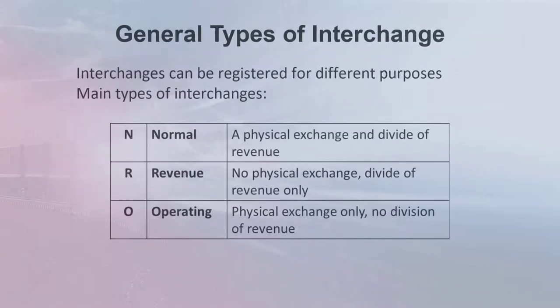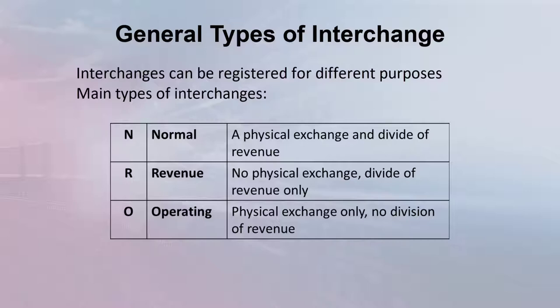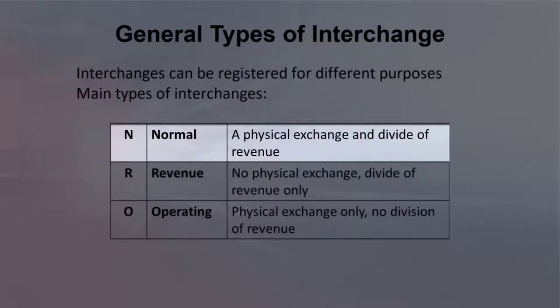When interchange points are registered with Rail Inc., the carriers must designate the type of interchange to be accomplished. There are several types of interchange. Three of the most frequently used are normal, revenue, and operating. The most frequently registered type of interchange is at a normal interchange point, where cars are physically exchanged and revenue is divided based on the interchange.